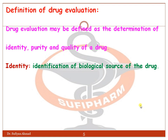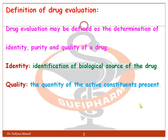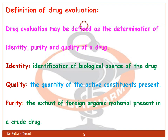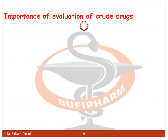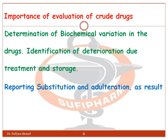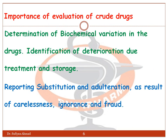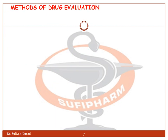Identity refers to the identification of the biological source of the drug. Quality refers to the quantity of active constituents present in it. Purity refers to the extent of foreign organic material present in a crude drug. The importance of evaluation includes determination of biochemical variation in the drug, identification of deterioration due to treatment and storage, and reporting substitution and adulteration as a result of carelessness, ignorance, or fraud.